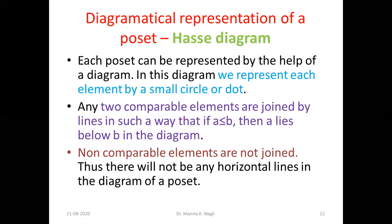Now this is very important: the diagrammatical representation of a poset, also called the Hasse diagram. To represent a poset with a diagram, you need to know the relation defined in that poset. Each poset can be represented by a diagram in which each element is represented by a small circle or dot, and any two comparable elements are joined by lines such that if a ≤ b, then a lies below b in the diagram.